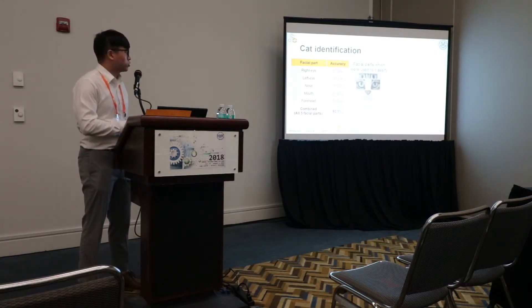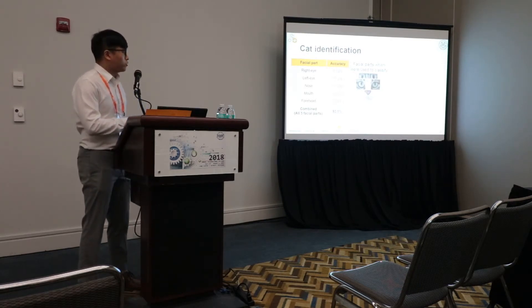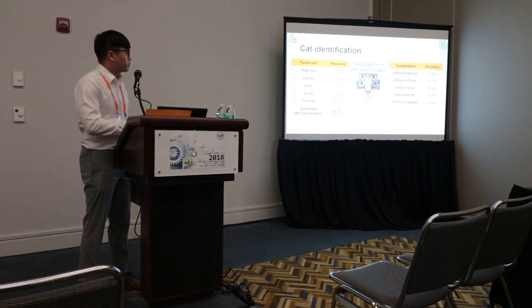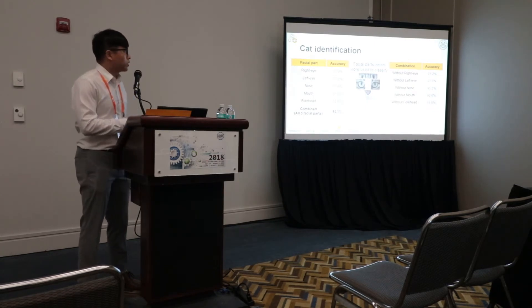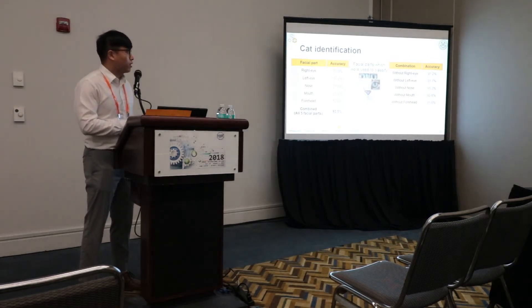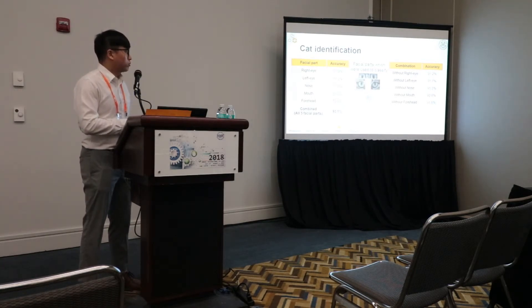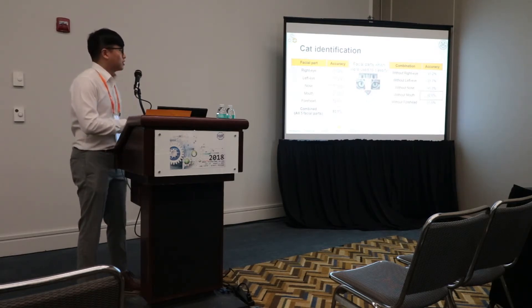In order to determine if there are redundant facial parts among the five features, I tested by removing each facial part in turn. Without right eye: 91.2%. Without left eye: 91.7%. Without nose, without mouth, and without forehead were also tested. We can see that the mouth is the most redundant feature.